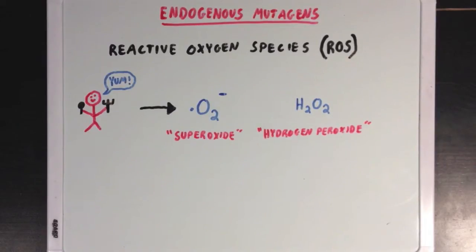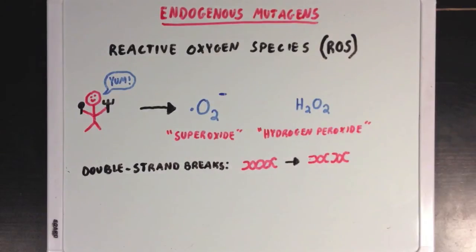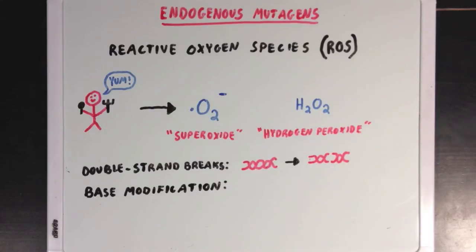Reactive oxygen species contain oxygen, but they're also highly reactive with different cell components, including DNA. By reacting with DNA, they can cause significant damage to a cell's genetic code. One example is the double-strand break, where ROS can break a DNA double helix into two smaller pieces. Another type of DNA damage ROS can cause is base modification, where nucleic acid bases are changed or swapped around, which can readily cause point mutations or other kinds.